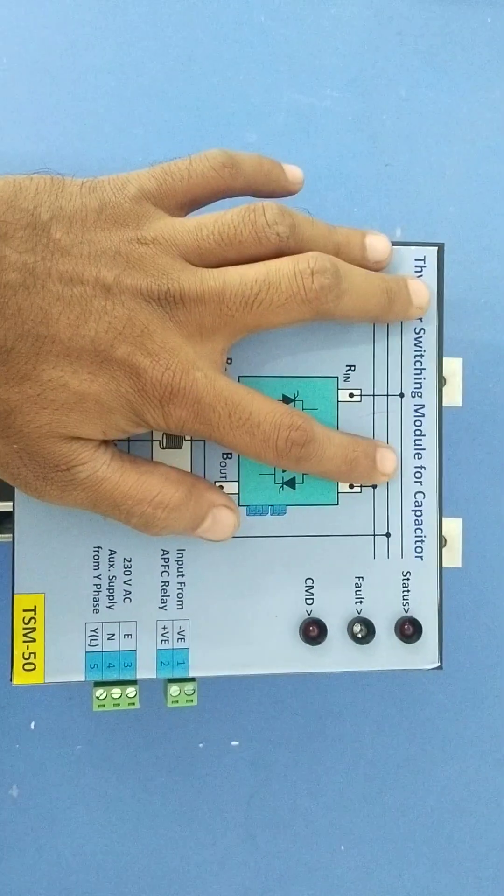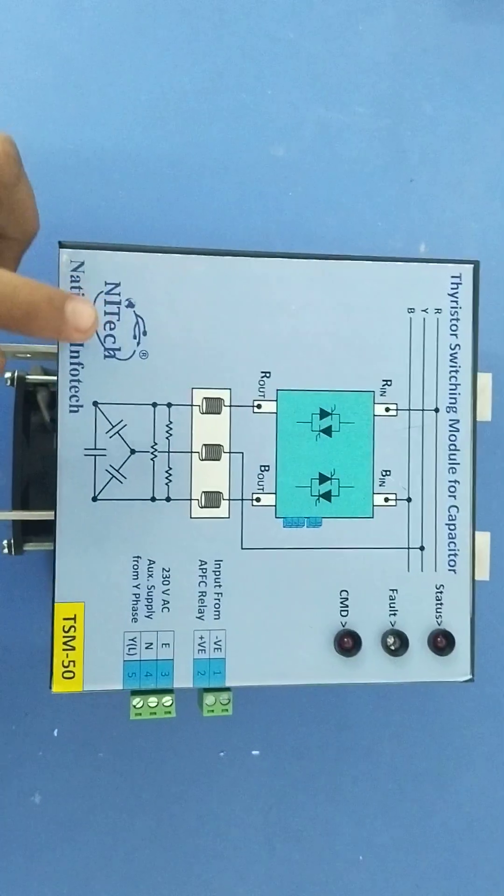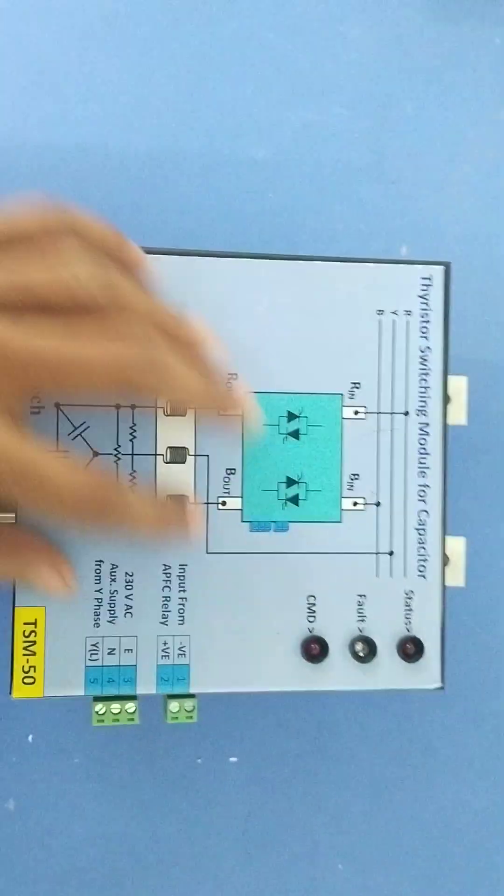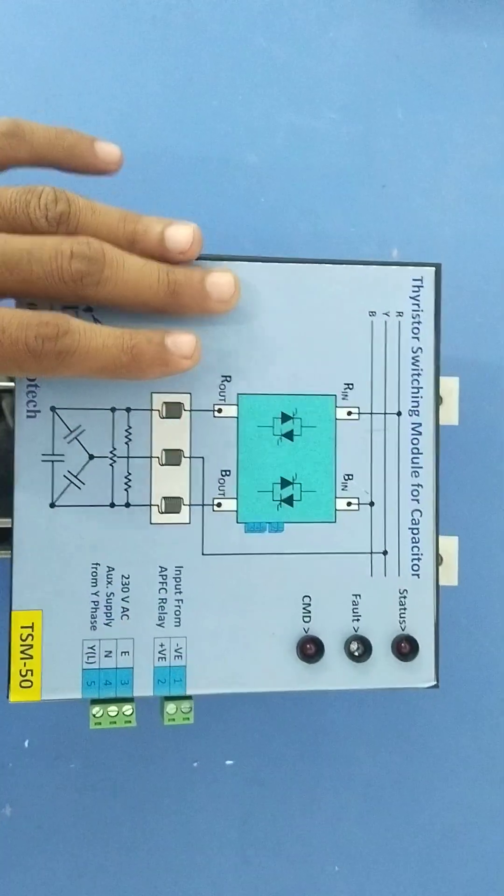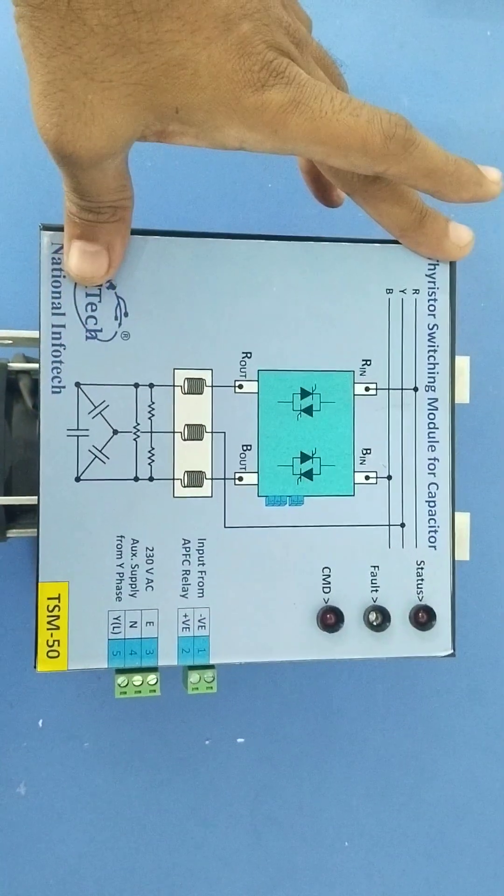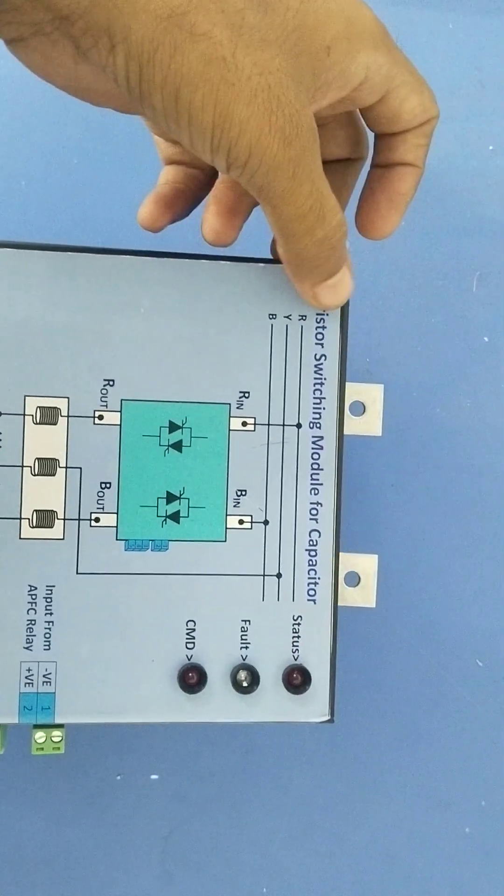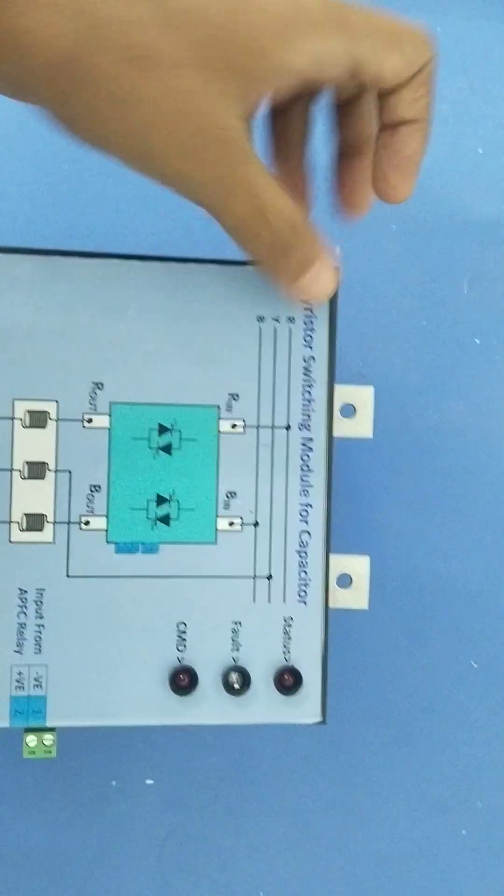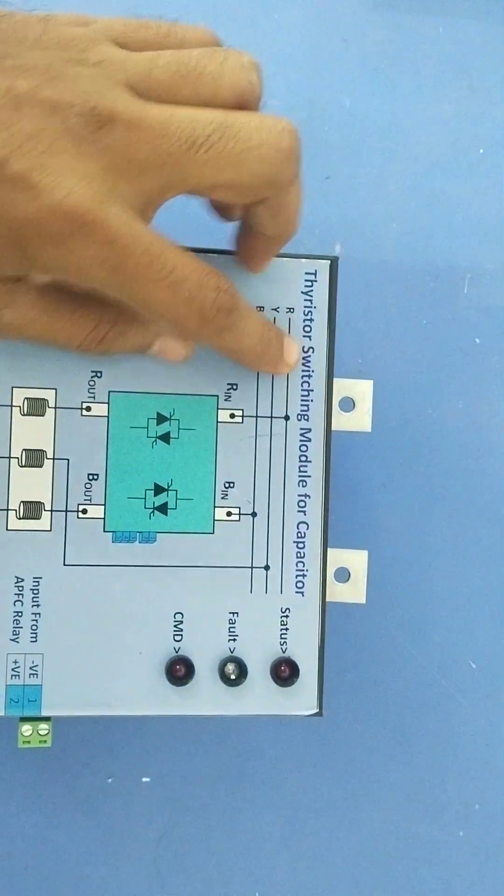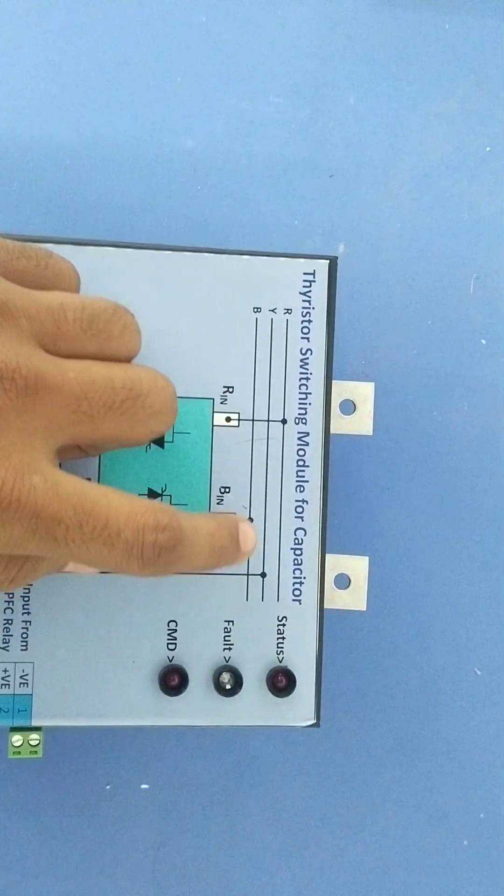This thyristor switching module for capacitor is manufactured by National Infotech. In this video we will discuss the connections required to operate this TSN. So three phase main 440 volt 50 hertz R, Y, B - out of that, R connection and N...